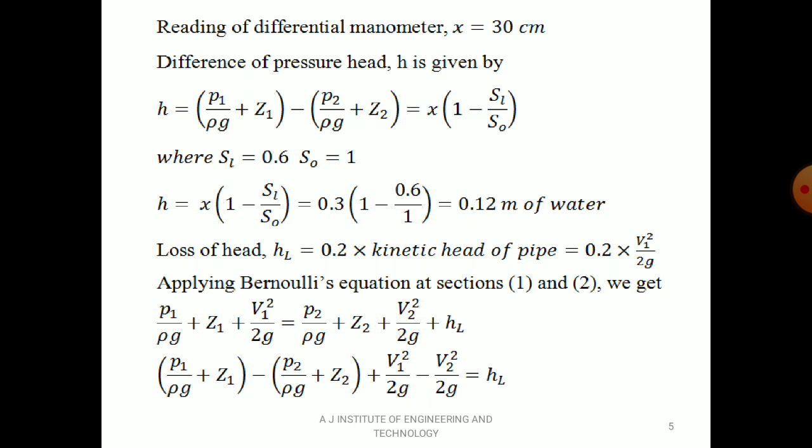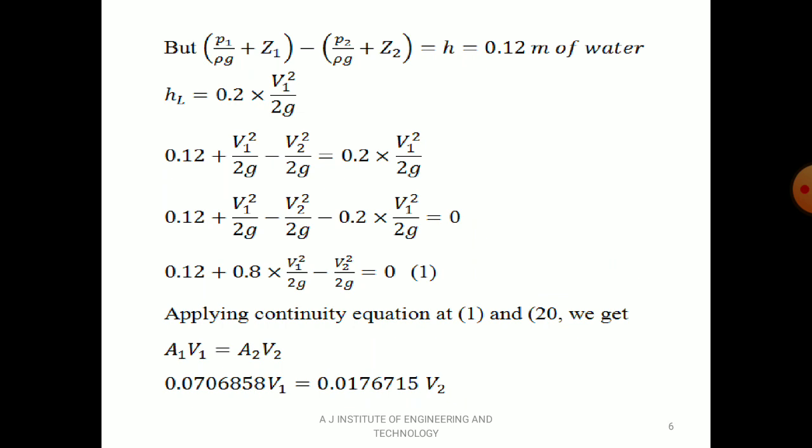Loss of head HL = 0.2 × V₁²/2g. Applying Bernoulli's equation at sections 1 and 2: p₁/ρg + z₁ + V₁²/2g = p₂/ρg + z₂ + V₂²/2g + HL. Rearranging: (p₁/ρg + z₁) − (p₂/ρg + z₂) + V₁²/2g − V₂²/2g = HL. Since p₁/ρg + z₁ − p₂/ρg − z₂ = h = 0.12 m, substituting: 0.12 + V₁²/2g − V₂²/2g = 0.2 × V₁²/2g.